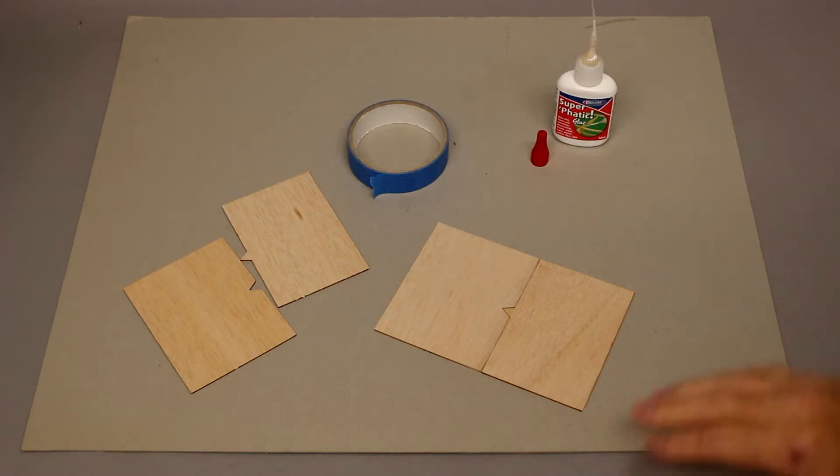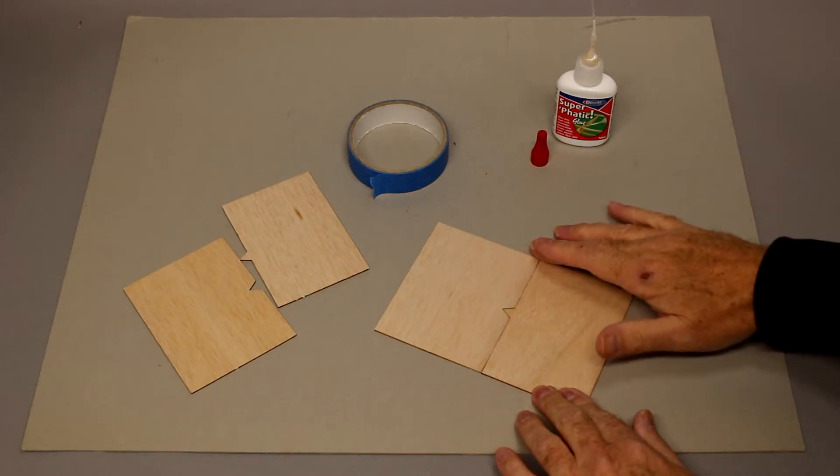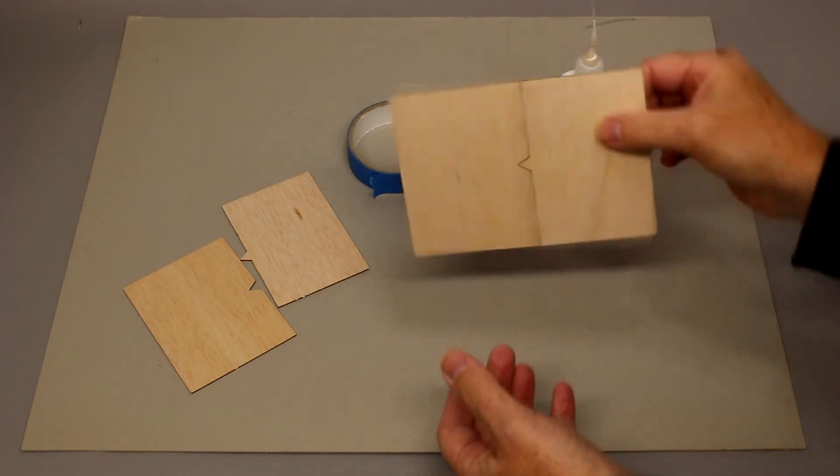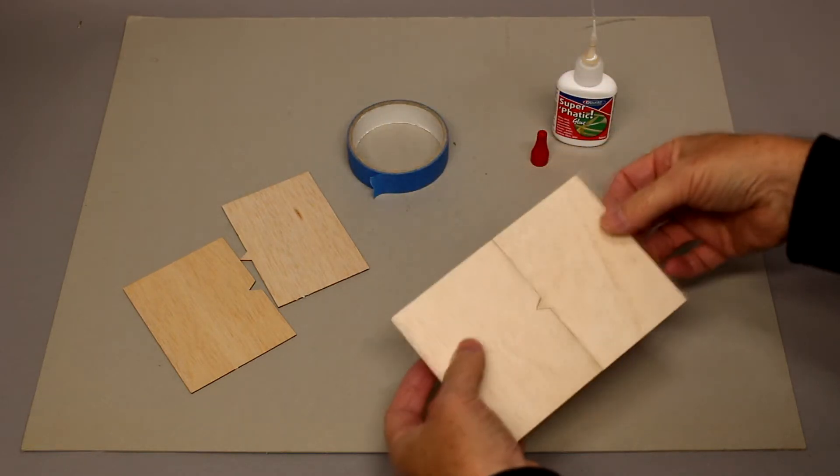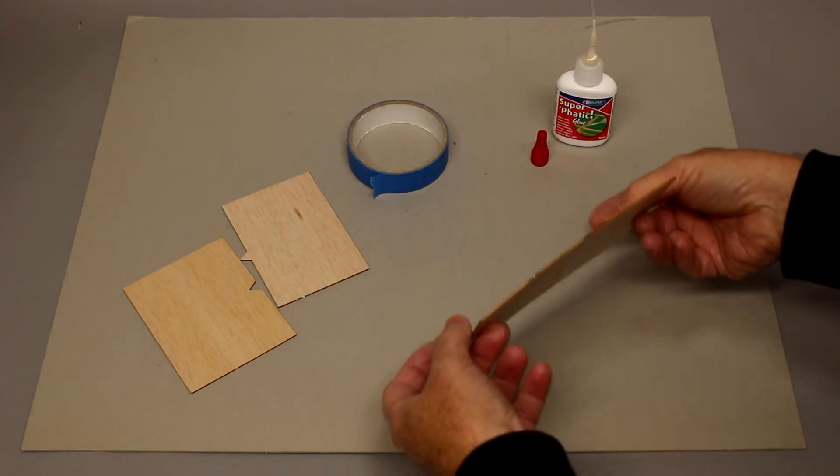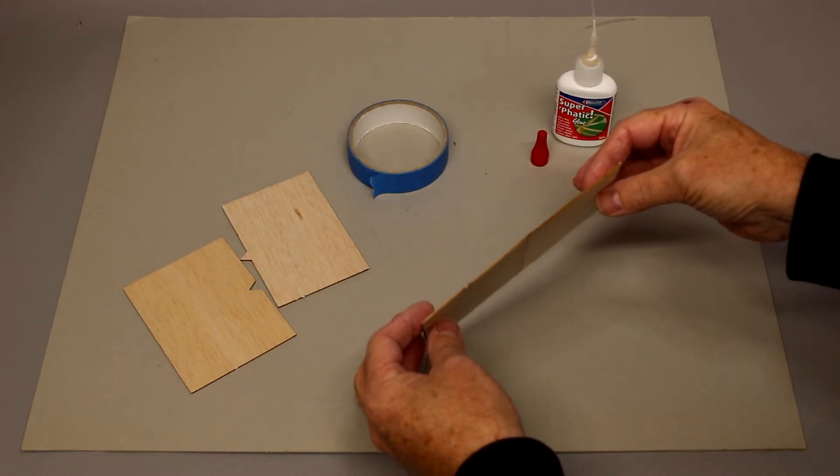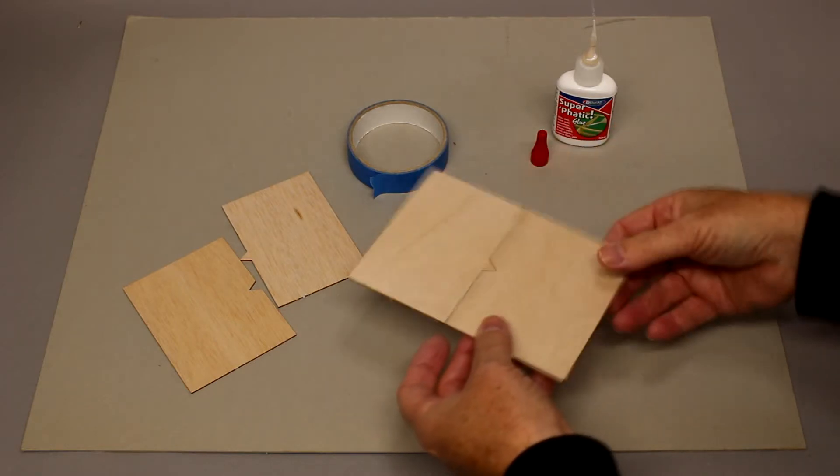We have a nice flat, level joint. It's nicely joined and this is only about 1/16th sheeting that we're using here.